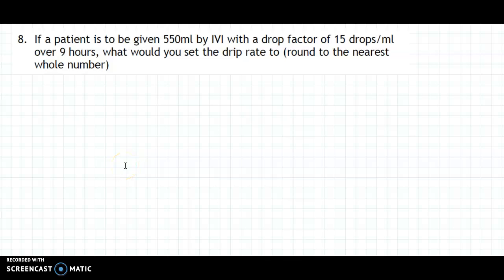If a patient is to be given 550 mL by IVI with a drop factor of 15 drops per mL over 9 hours, what would you set the drip rate to?